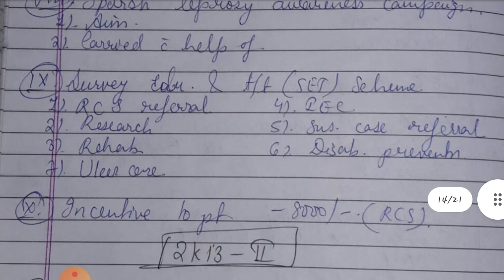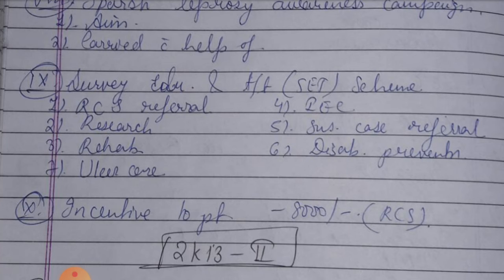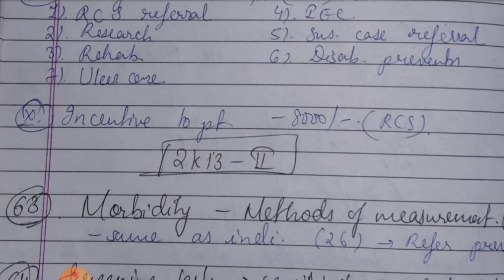Ninth, Survey Education and Treatment Scheme. Components include: first, survey; second, research; third, rehabilitation; fourth, IEC; fifth, suspected case referral; sixth, treatment; and seventh, care — including reconstructive surgery referral. Tenth, Incentive to Patient: incentive for reconstructive surgery is provided for all major reconstructive surgeries irrespective of financial status, as of late 2017.